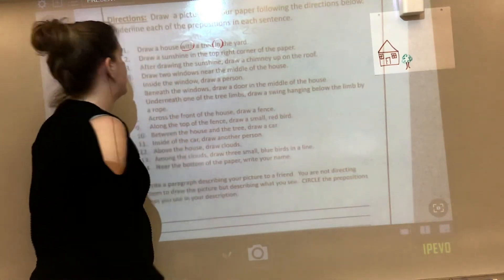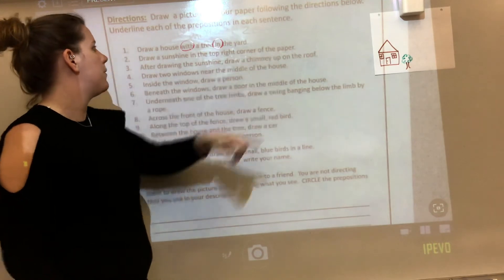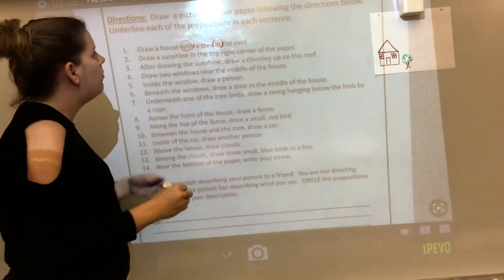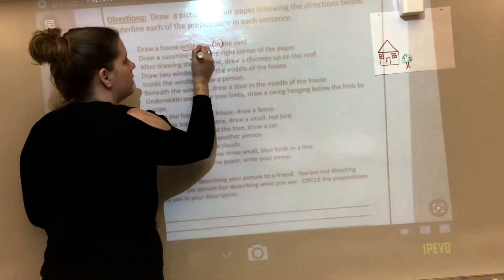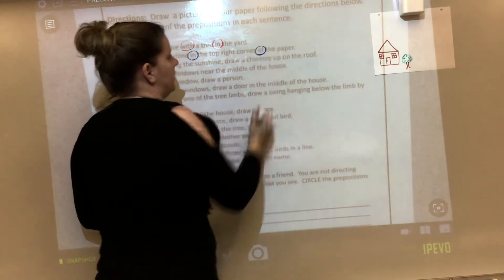Now the next sentence says, draw a sunshine in the top right corner of the paper. So I know, oh, there's another 'in.' And I know 'of' is a really big preposition that we see a lot.